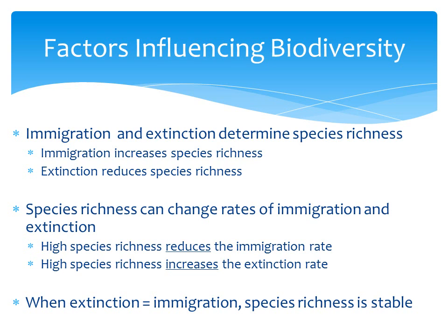Species richness is determined by immigration and extinction in such a way that when the extinction rate equals the immigration rate, then species richness stays the same over time. When you lose as many species in a year as you gain new species, then you have the same species richness from one year to the next.